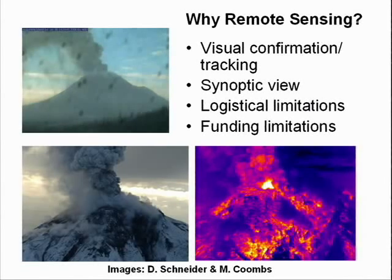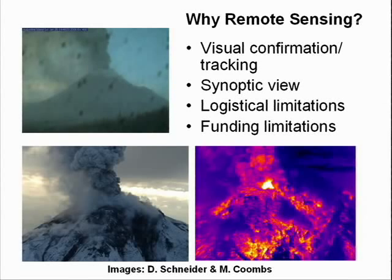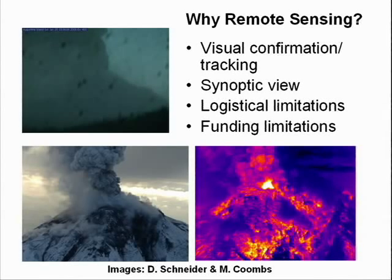Even with ground instruments, they don't tell us everything. Webcams are great and give good confirmation that something starts, but pretty soon after it starts you don't get to see too much as the ash comes down. So how do we go about solving this problem? We use remote sensing. Remote sensing has a couple of advantages. One, it can provide a synoptic view of the area. Satellite images can cover everywhere we want to look. We can use this for providing confirmation of eruptions and also for tracking certain features.